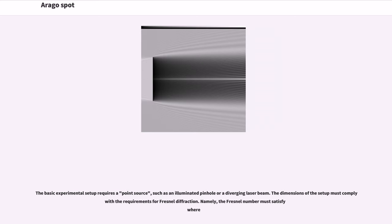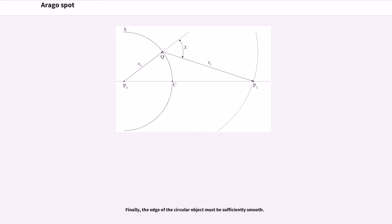The basic experimental setup requires a point source, such as an illuminated pinhole or a diverging laser beam. The dimensions of the setup must comply with the requirements for Fresnel diffraction. Namely, the Fresnel number must satisfy certain conditions. Finally, the edge of the circular object must be sufficiently smooth.